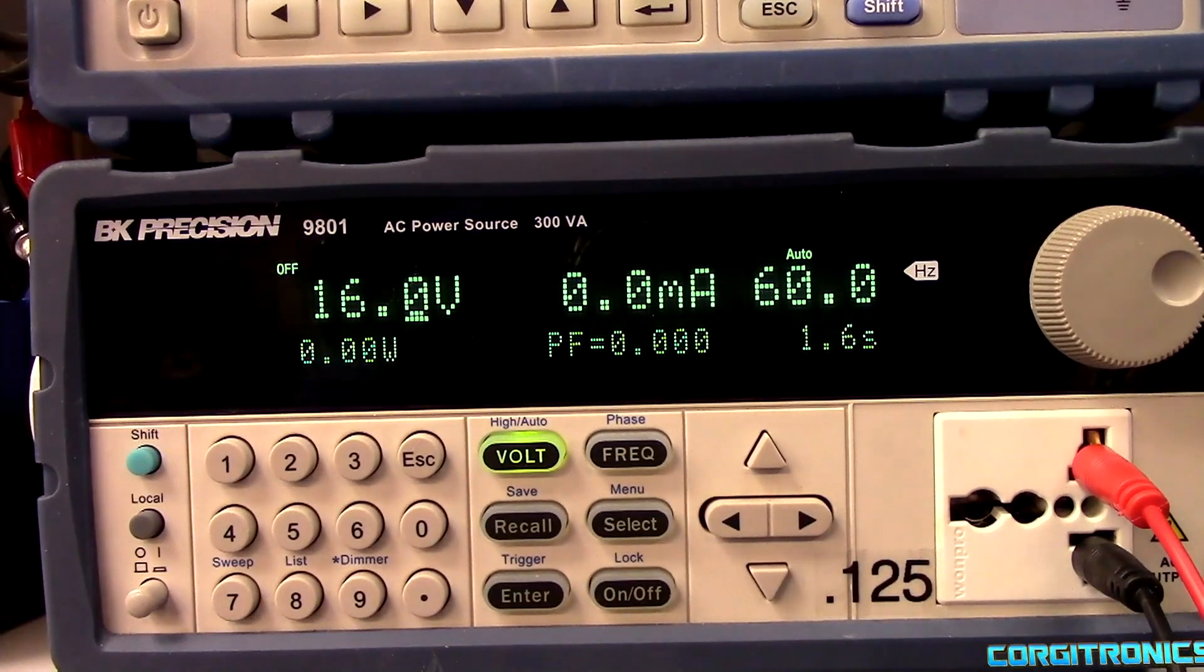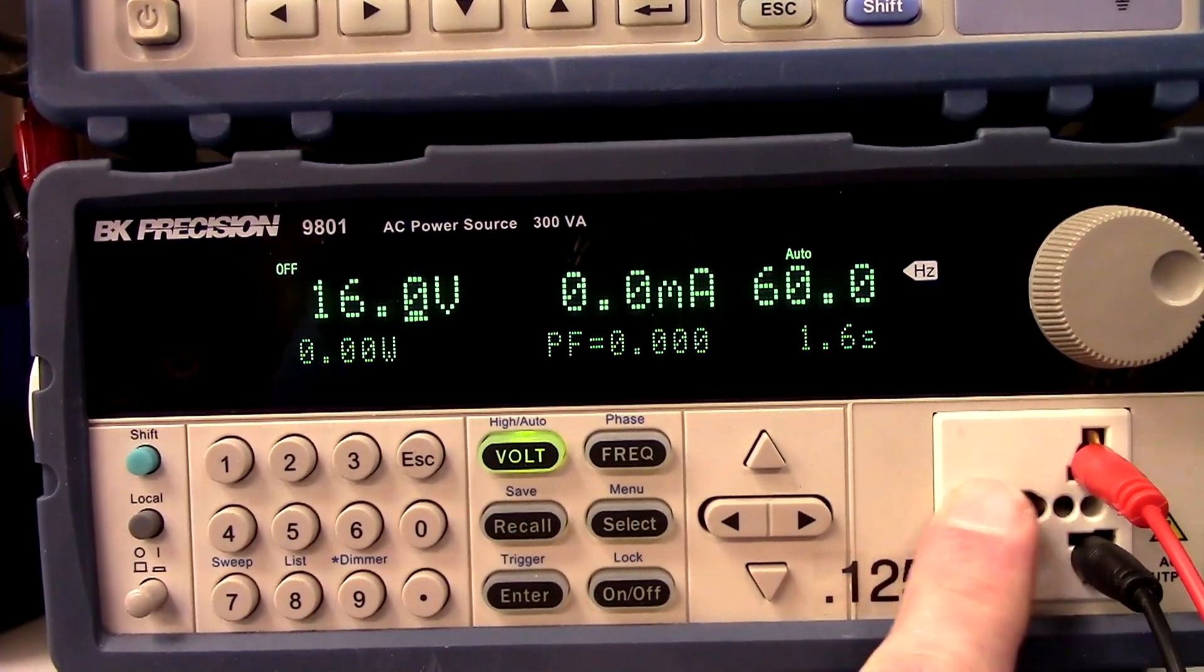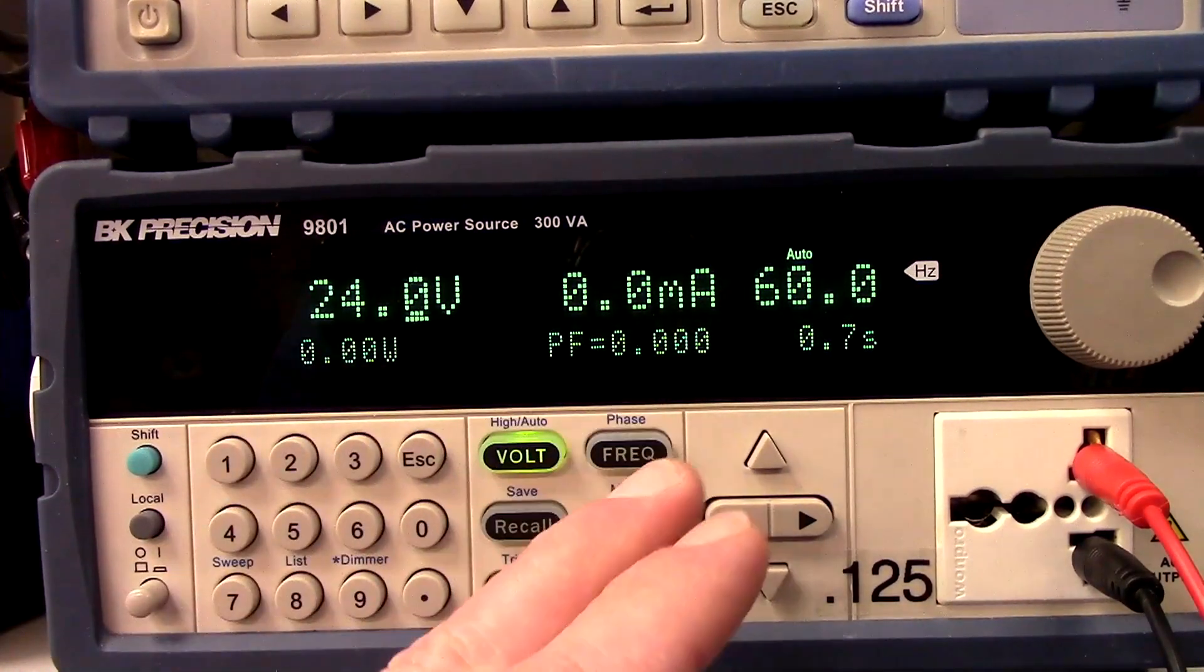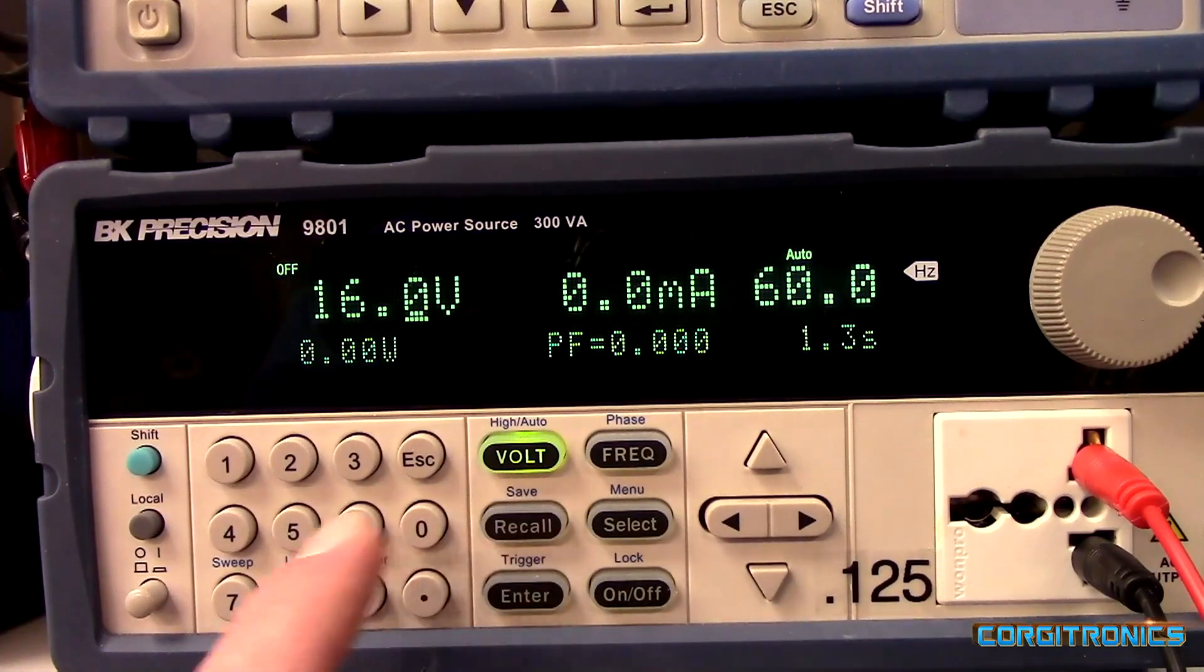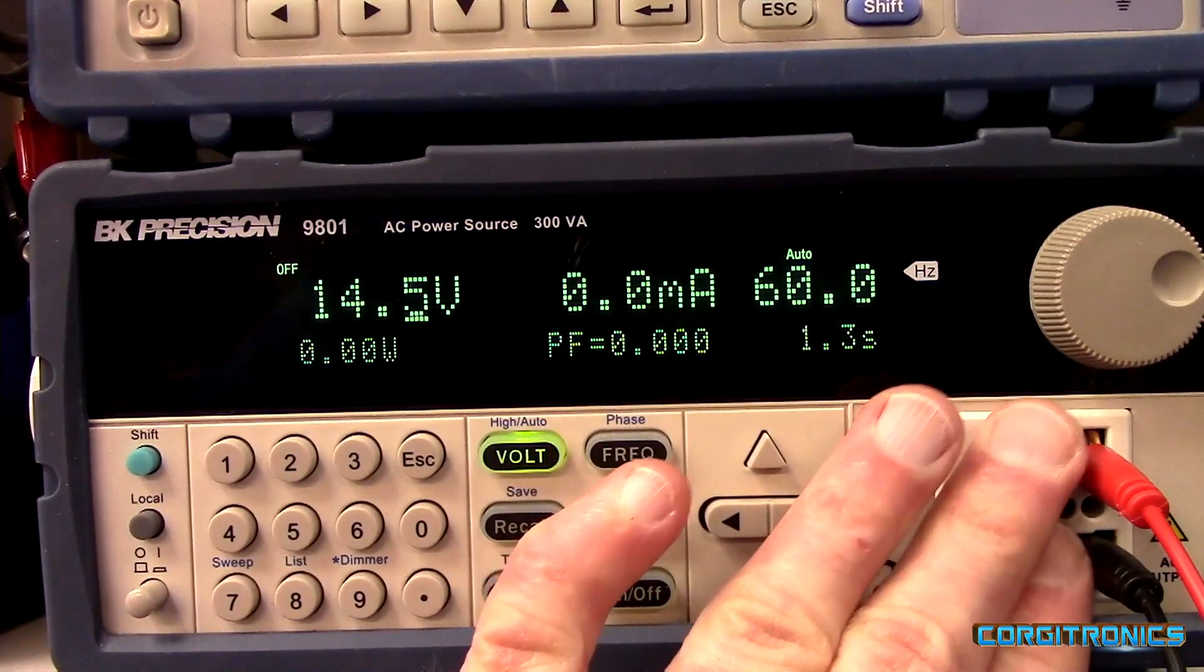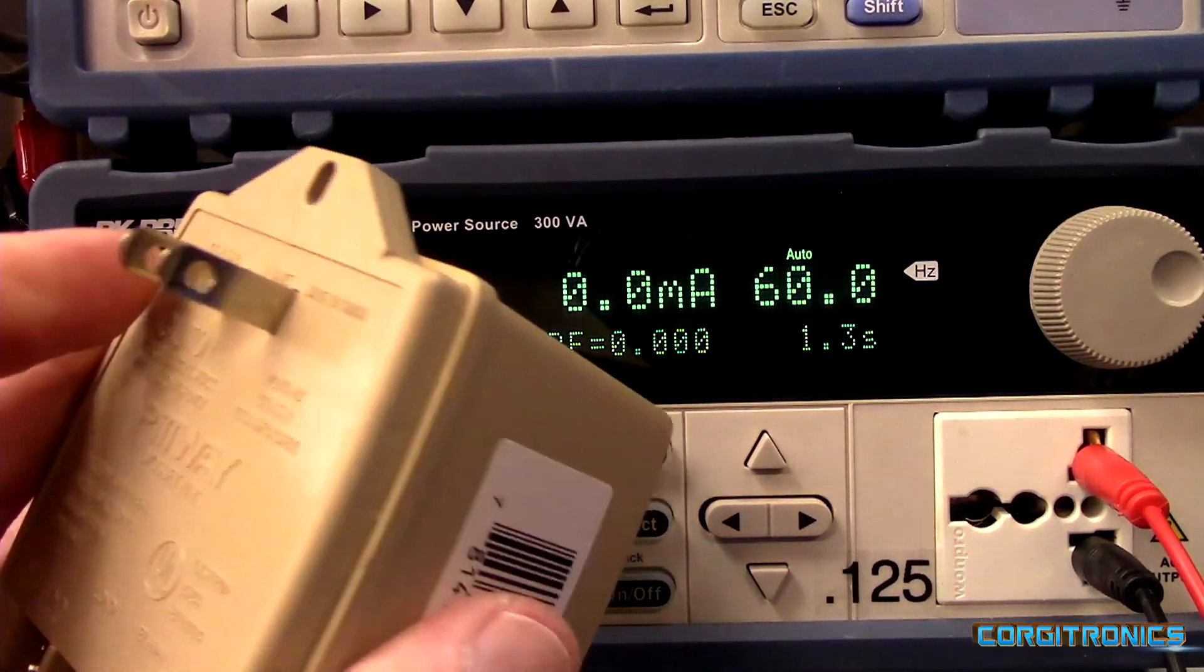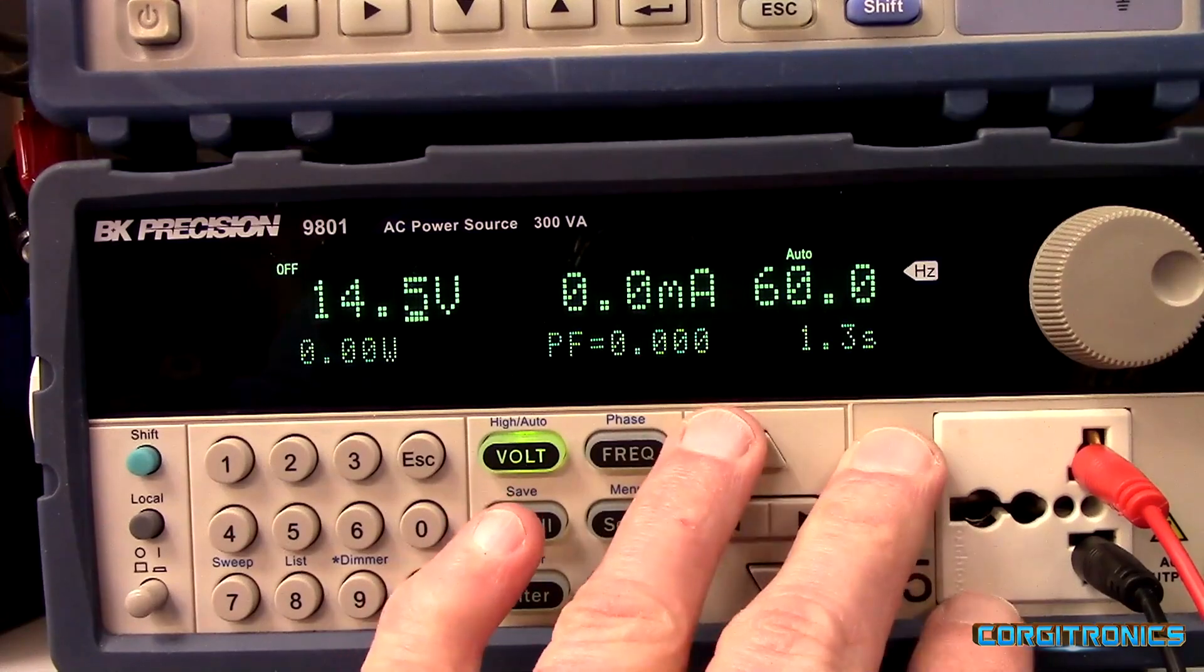Now to test this out, I've got a nice BK Precision 9801 AC power supply here, and that provides AC voltage up to 300 volts AC. The nice thing is that I can dial in any voltage I want. I can set it to 24 and we get 24 out, or just 16. And say your transformer was a little weak, we can set it to 14.5 and we can test the relays at that. The nice thing is this is isolated AC output, so it's safe from mains electric shock. It's the same as using a regular transformer, except that this is very controllable. I can control the amount of current and voltage.